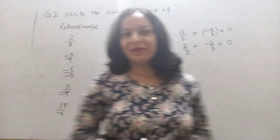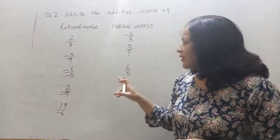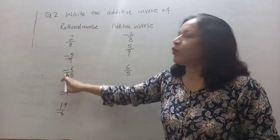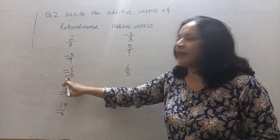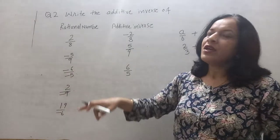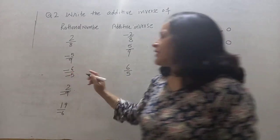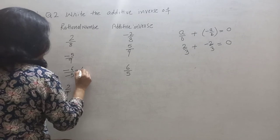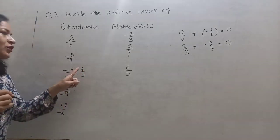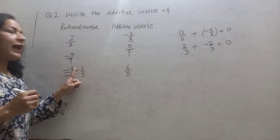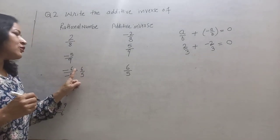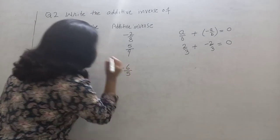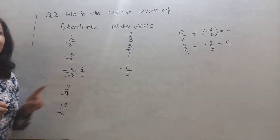Am I right? No. Because for minus 6 upon 5, the negative sign will cancel with the negative sign, and it will become 6 upon 5. So the additive inverse of 6 upon 5 will be minus 6 upon 5.